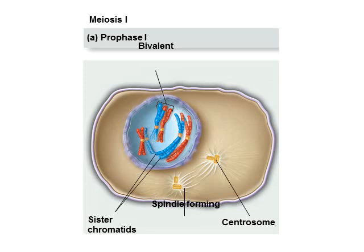Here's what prophase I looks like. We have our eukaryotic animal cell with two centrosomes already replicated, starting to move towards their respective poles. The chromosomes in the nucleus are paired up with their homologous chromosome to form the bivalent. Crossing over occurs, visible on the middle-size chromosome and the really large chromosome pair. The nuclear membrane is also starting to break apart.